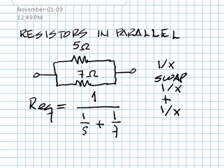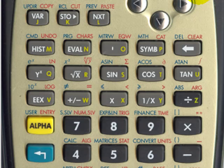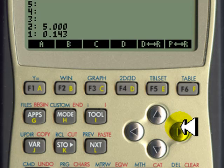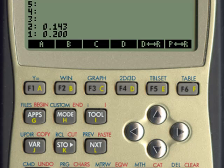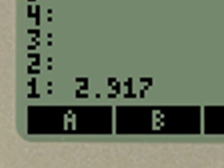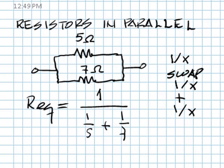Let's do that. In this case, we begin by inverse, swap, inverse, addition, inverse, and that 2.917 is the equivalent resistance of 5 in parallel with 7.